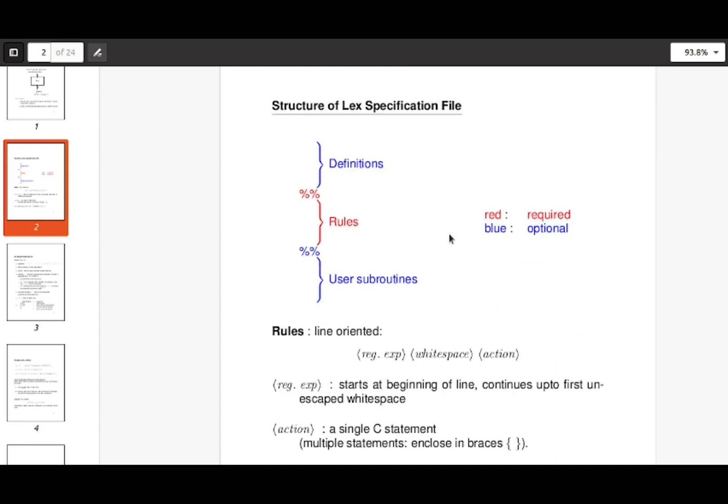A Lex file should have a section beginning with double percentage and the rules that help us process the input stream. The other sections are optional, which I will cover as and when required.